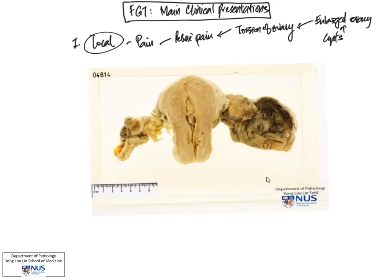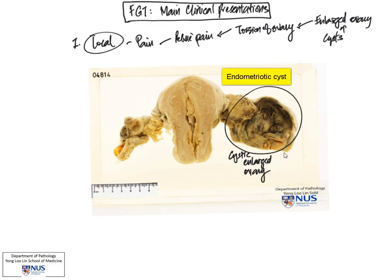For example, if there's an ovarian cyst, as you can see here, there are actually bilateral ovarian cysts. You can see that this makes the ovary fairly large. This is actually an example of endometriosis or an endometriotic cyst, and this can predispose to torsion.